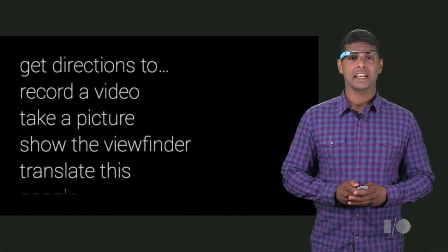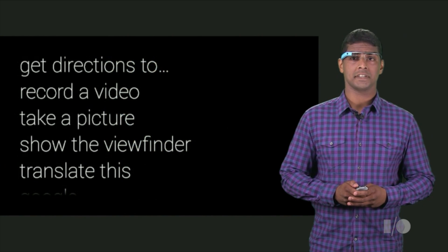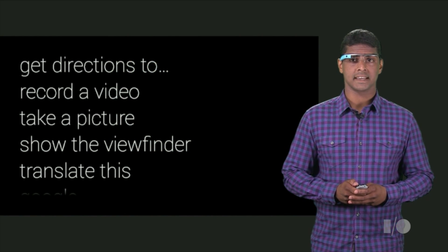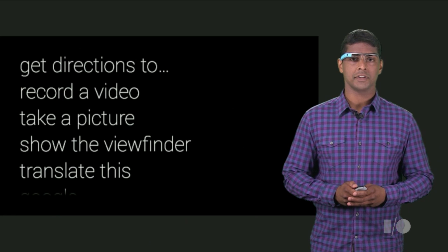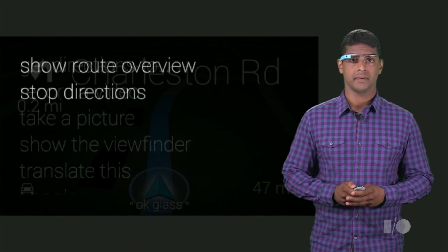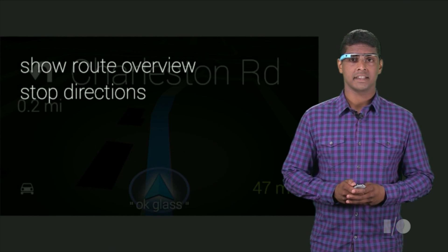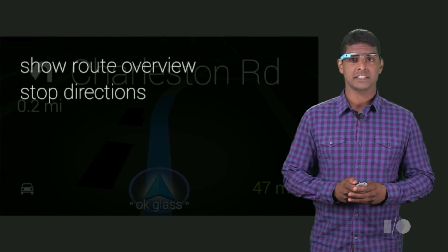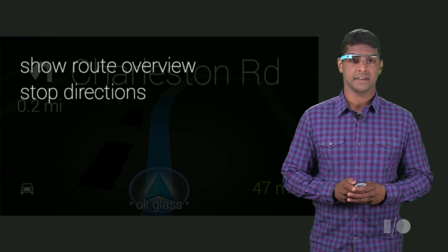This Glassware uses two voice APIs. First, the voice trigger API links the 'get directions to' voice command to the Google Maps navigation activity. Second, the contextual voice menu API defines a custom OK Glass menu within this activity.